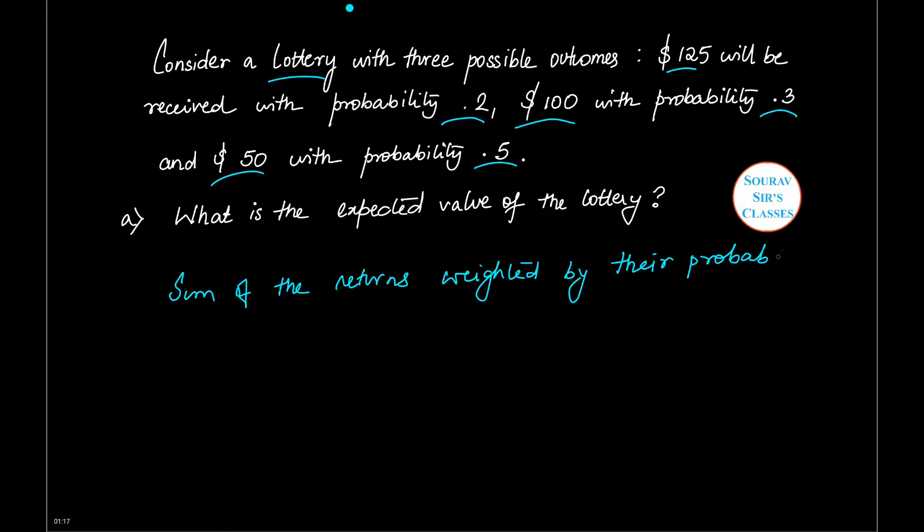The expected value (EV) is equal to the sum of returns weighted by the probability. So this is return 125 with probability 0.2, then you have 100, the probability of winning $100 is 0.3, and then you have 50 and the probability of winning $50 is 0.5.